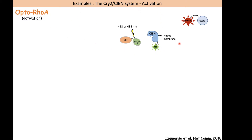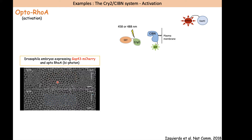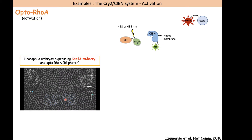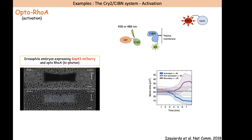The same strategy can be used to do the opposite — to activate RhoA. Instead of targeting CIBN to the mitochondria, CIBN is targeted to the plasma membrane so the GEF is addressed to the plasma membrane and activates the RhoA pathway. This experiment was done in Drosophila using Gap43 protein tagged with mCherry as a reporter, while CRY2-GEF was untagged. At the site of photoactivation you see constriction of the tissue — a reflection of RhoA activation at the plasma membrane — and the apical area of activated cells diminishes upon stimulation.